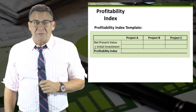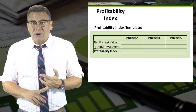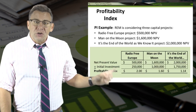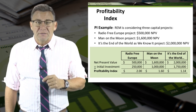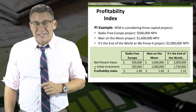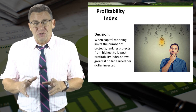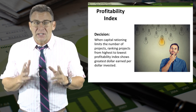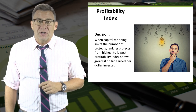This is a common template used for profitability index analysis. The calculation for profitability index is net present value divided by initial investment. Once we compare net present value to the initial investments of each project, it appears that the best project is Radio Free Europe, as it returns $2 for every dollar invested. When capital rationing limits the number of projects, ranking projects from highest to lowest profitability index shows the greatest dollar earned per dollar invested.